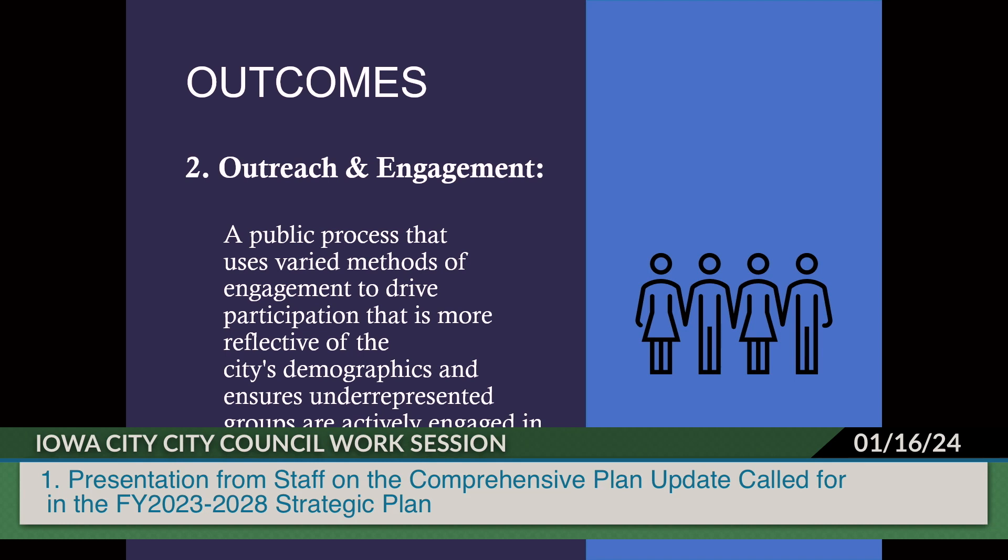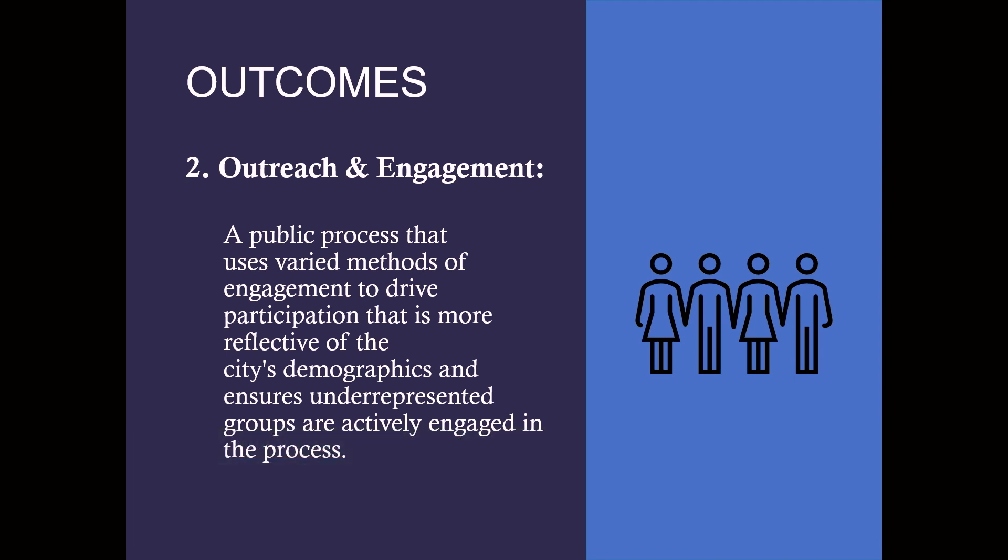The second outcome is a public process that uses varied methods of engagement to drive participation more reflective of the city's demographics, ensuring underrepresented groups are actively engaged. Staff has included a request in the draft scope of work for the consultant to prepare a public engagement plan that would be implemented as part of the comprehensive plan update. We want this engagement plan to be flexible so we can adjust if we're not engaging the people we need to be engaging. A robust outreach effort is one of the most important aspects of this update.